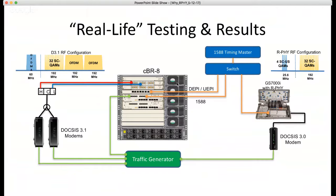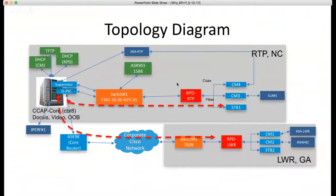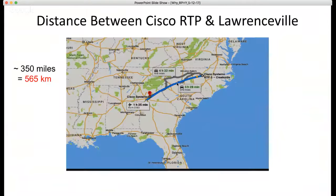The architecture showed the local RPD in RTP and then the Remote PHY node in Lawrenceville going through the Cisco corporate network — 12 hops, routers and switches, a lot more delay than expected. They also limited us to 500 Mbit/s link, so we couldn't do DOCSIS 3.0 line rate at 1.2 Gbit/s. Fine — we just worked with that limitation.